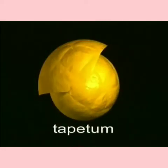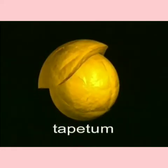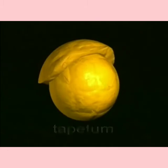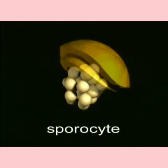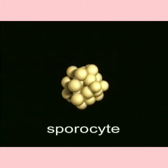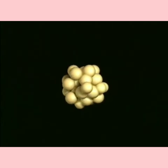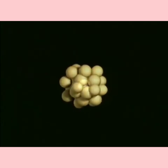Below the jacket, there are two layers of cells called the tapetum, which nourish the fertile tissue within. The fertile tissue consists of sporocyte cells. Each sporocyte cell is diploid, containing two sets of chromosomes, one from each parent.